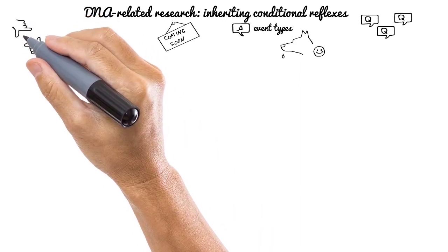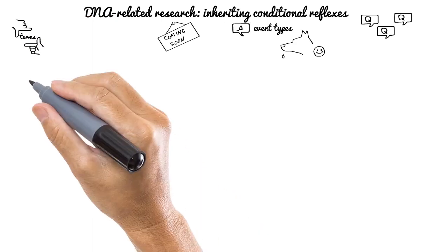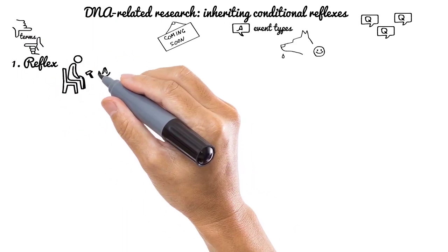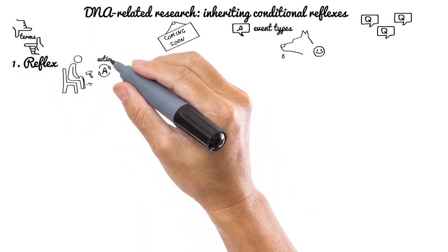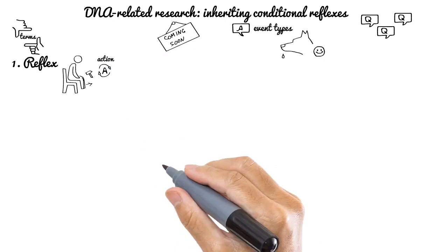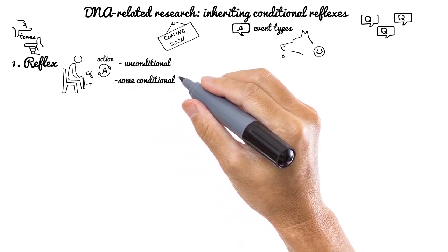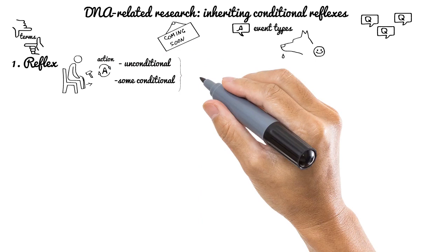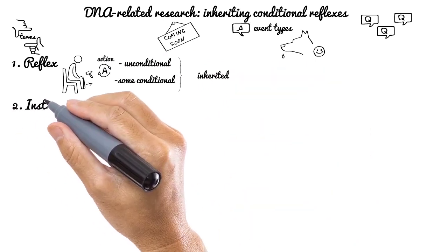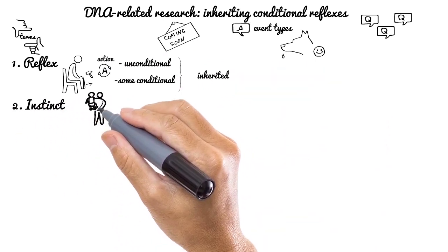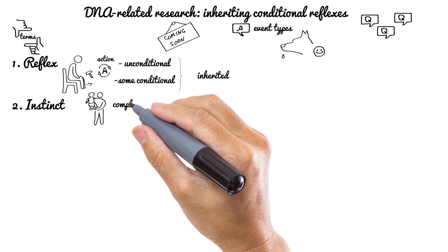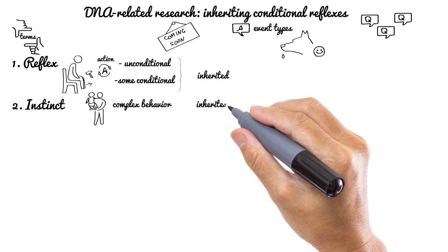I was trying to separate several terms from each other for a reason. Reflex is the body automatic action in response to a stimulus or environment conditions. Unconditional and some conditional reflexes are inherited. Instinct is the inherent way towards a particular complex, innate stereotype behavior. Instincts are also inherited.